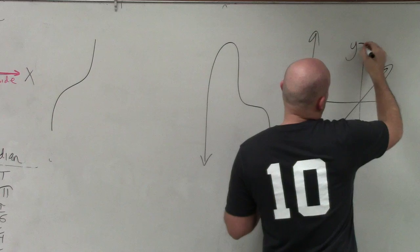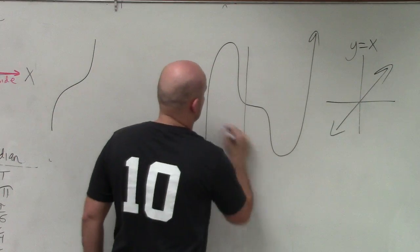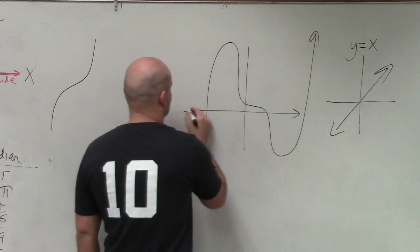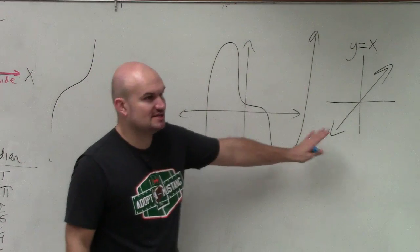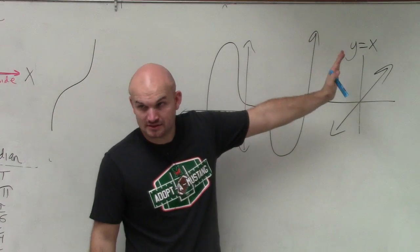looked like this, which was y equals x, right? I'm going to draw the x and y-axis here. Do you guys see how these have the same end behavior? They both fall left and rise right. Does everybody see that?